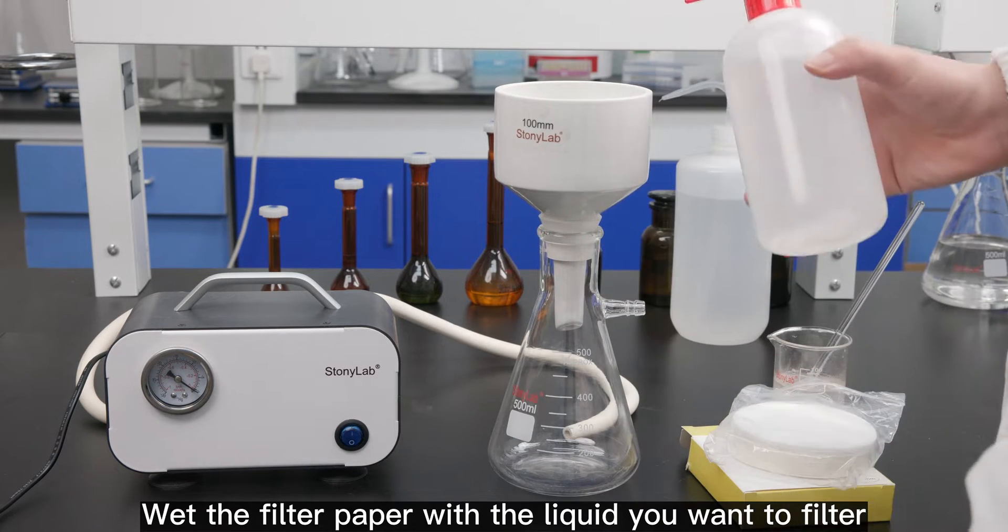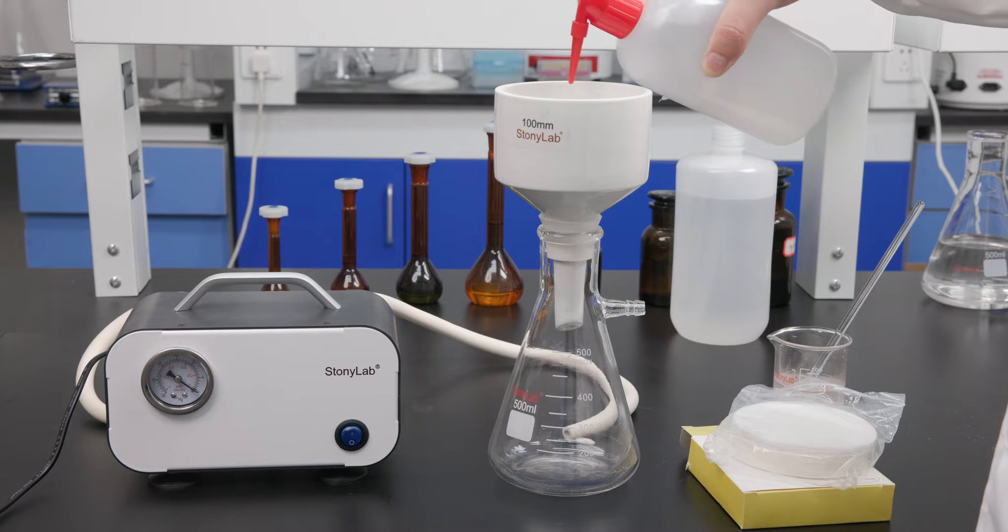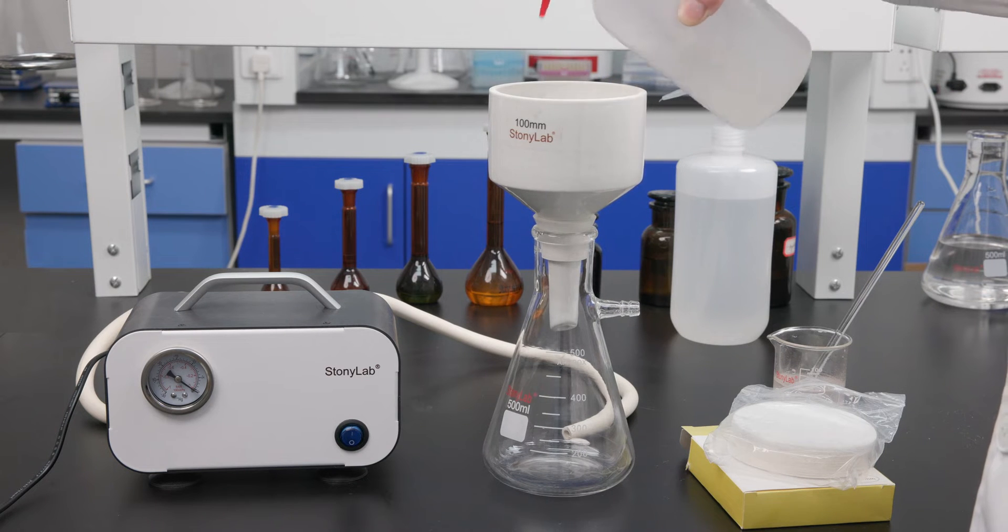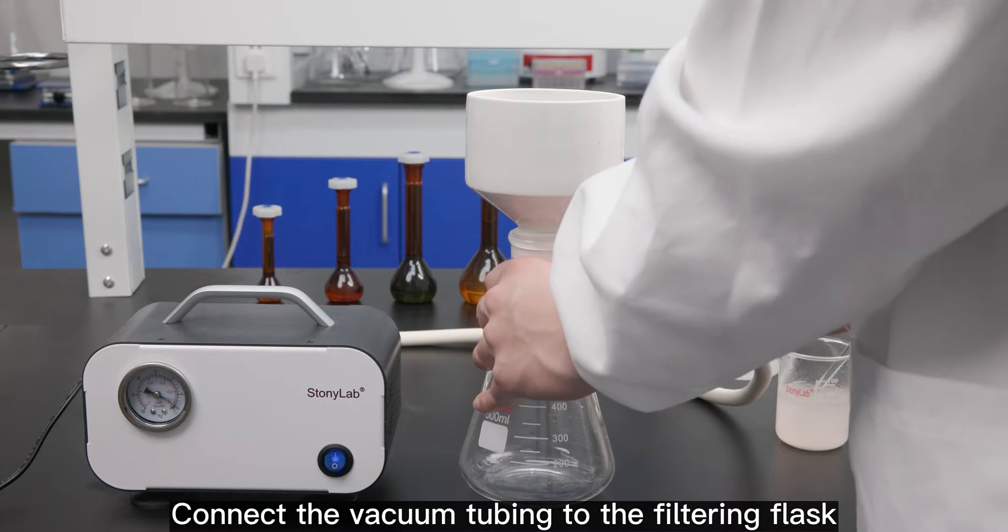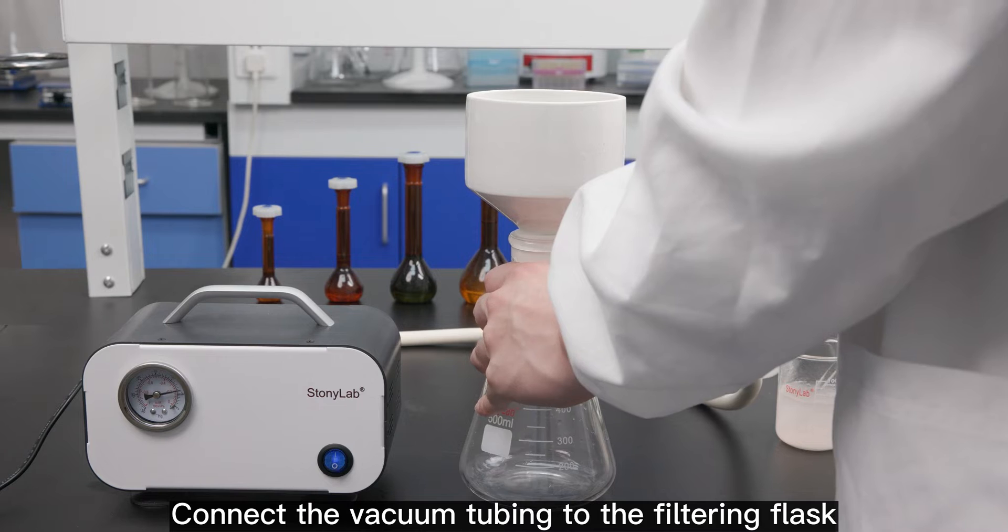Wet the filter paper with the liquid you want to filter. Turn on the vacuum pump. Connect the vacuum tubing to the filtering flask.